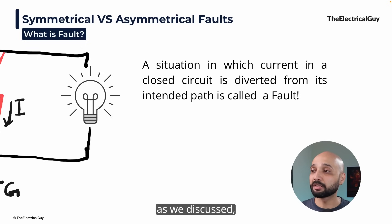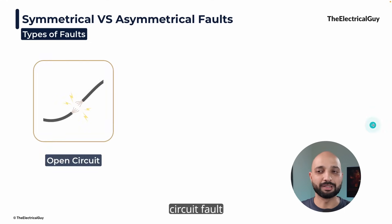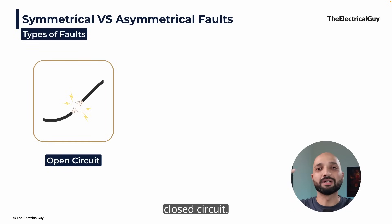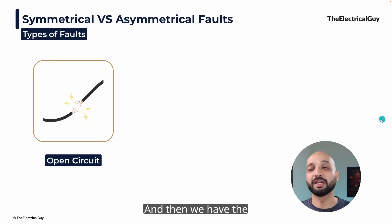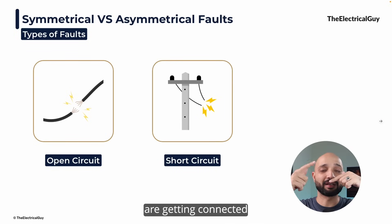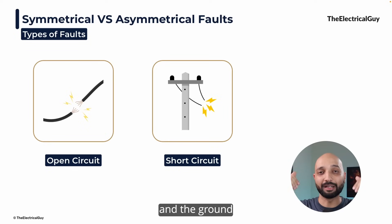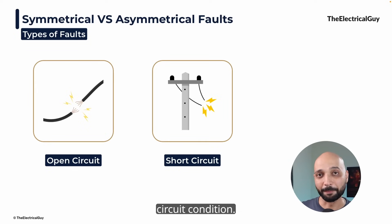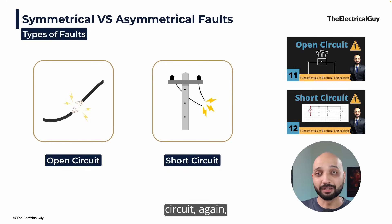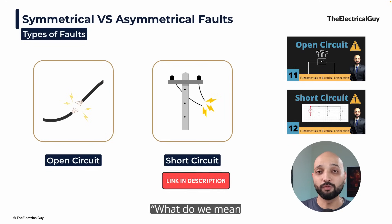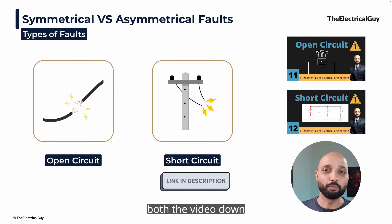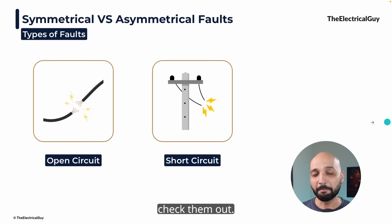As we discussed, there are two types of fault that can happen in the power system. One is the open circuit fault, where the conductor is broken or something has happened and there is no closed circuit, so current will stop flowing. And then we have the short circuit, where two conductors are getting connected to each other or one phase wire and the ground are getting connected — that condition is known as a short circuit condition. I have a dedicated video on short circuit and open circuit; links are in the description.